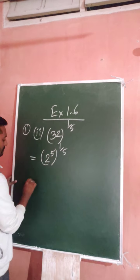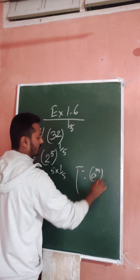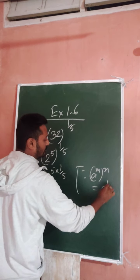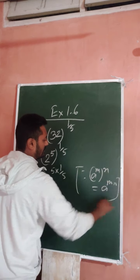So 2 to the power 5 whole to the power one by five. Next one is 2 to the power 5 times one by five. So this 5 and 5 cancel. This is 2 to the power one, which is 2.